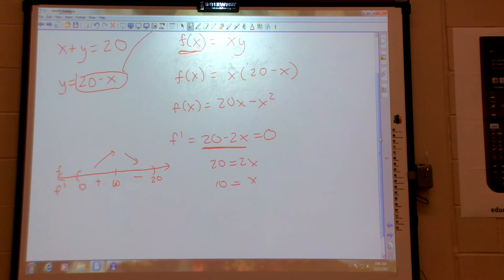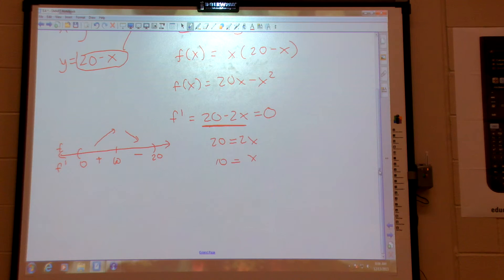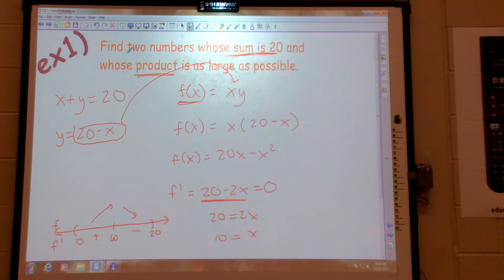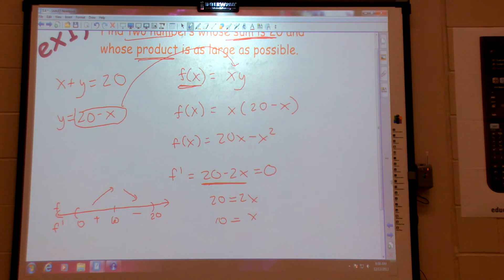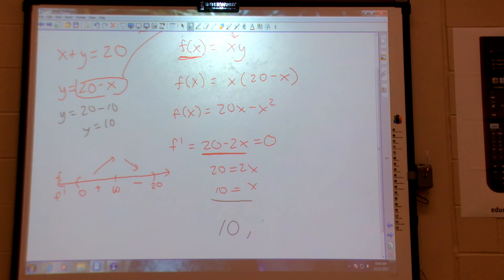So 10 is what x is, right? But I'm asked to find two numbers. So what do I do? Go to the equation you made. My little factoid, right? y is 20 minus 10. So y is also 10. So my two numbers are 10 and 10.